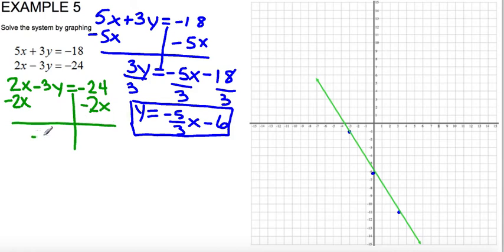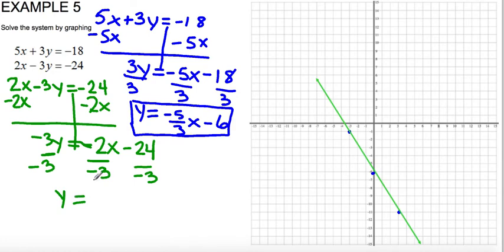On the left side, I have negative 3y. Bring down the equal sign. And then I have negative 2x minus 24. To get y by itself, I have to divide all the terms by negative 3. So I get y equals negative 2 divided by negative 3 is positive 2 thirds x, and then negative 24 divided by negative 3 is positive 8. And now my second equation is in slope-intercept form, so I can graph it.